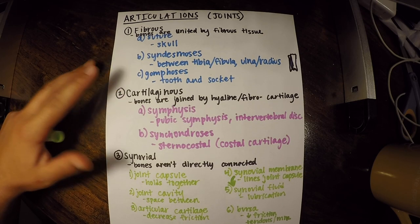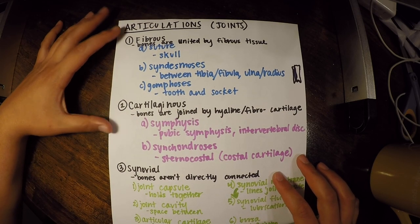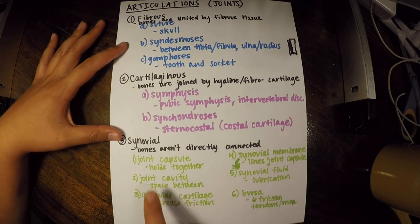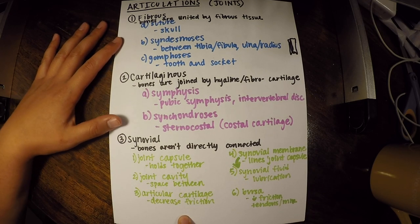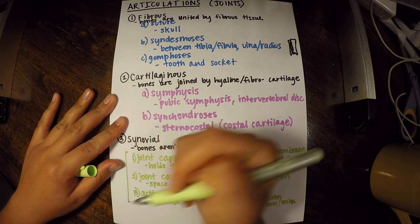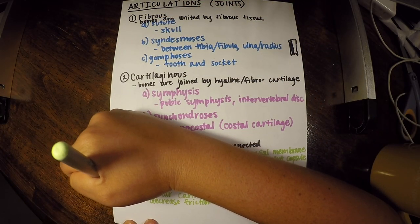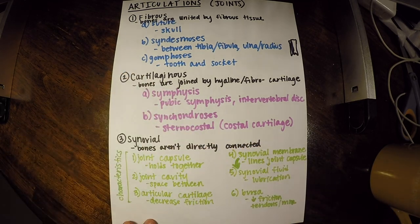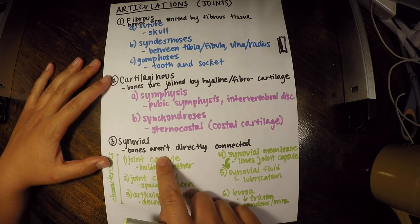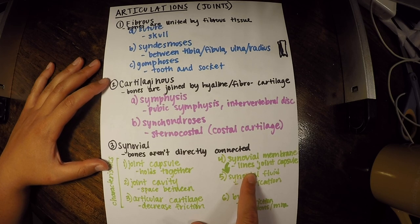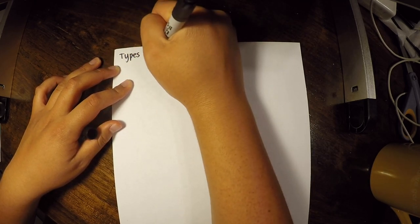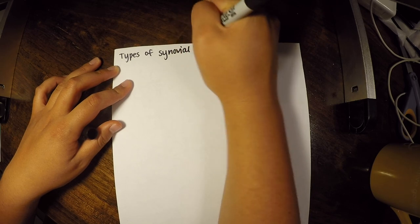We've covered all three categories: fibrous, cartilaginous, and synovial — with the different types for the first two and the characteristics for synovial. Now let's dive deeper into the different types of synovial joints.